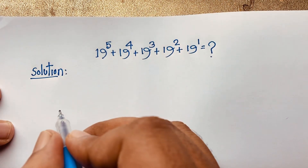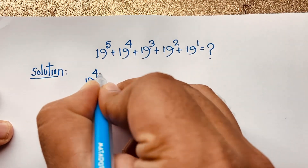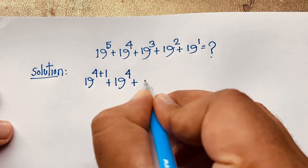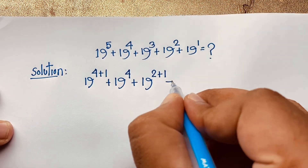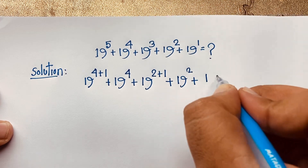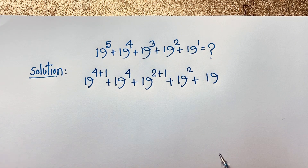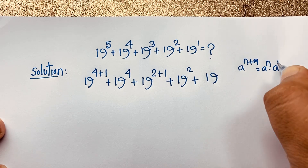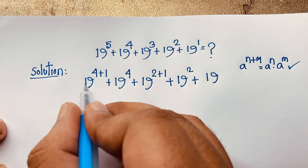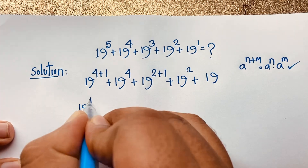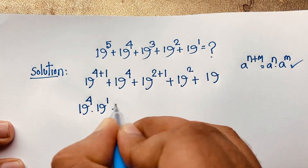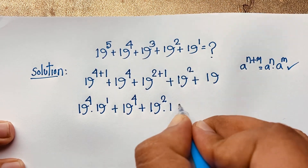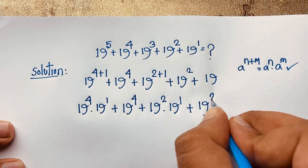Here we have 19 power 5, which is 4 plus 1, giving power 5. Then 19 power 4 plus 19 power 3, that is 2 plus 1, and 19 power 2 plus 19 power 1. According to the exponential law, a to the power (n+m) equals a to the power n times a to the power m. Applying this formula, 19^5 becomes 19^4 times 19^1, plus 19^4, plus 19^2 times 19^1, plus 19^2, plus 19.